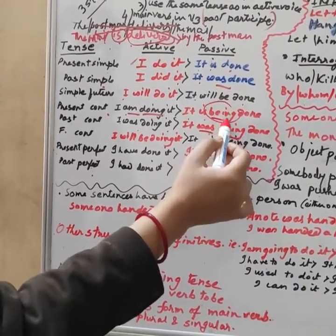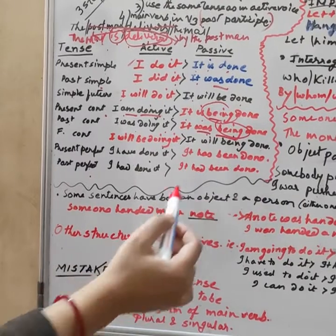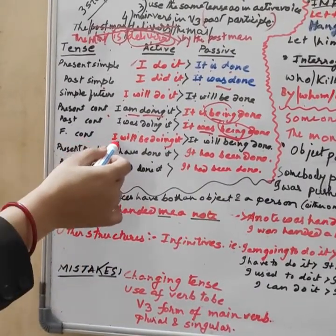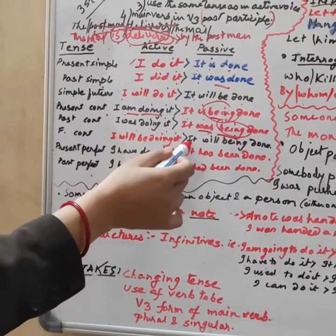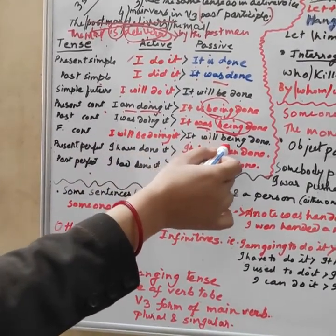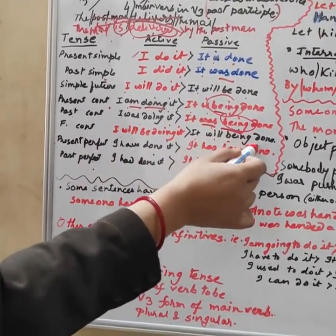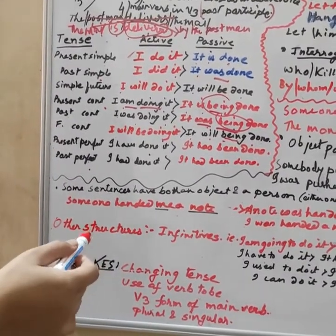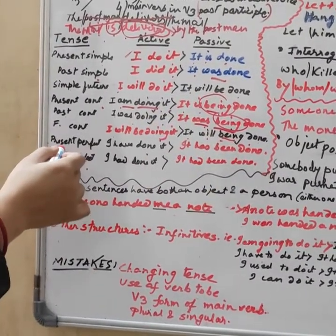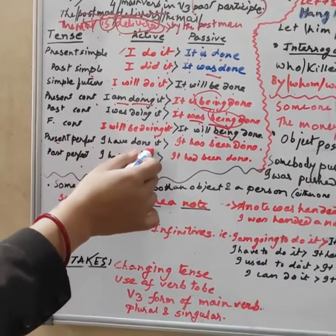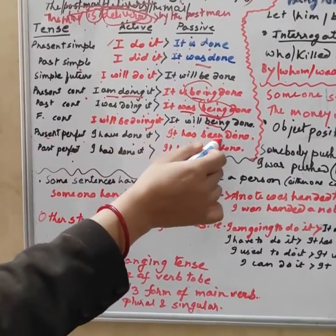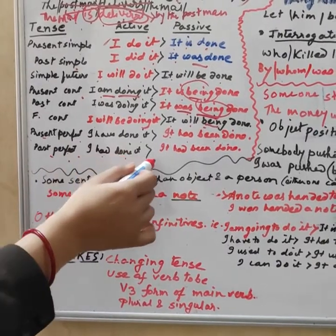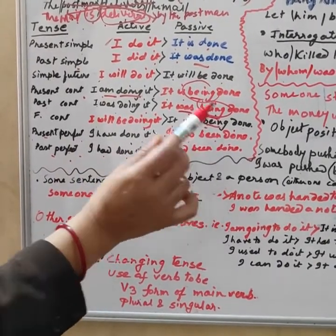Here 'being' plays a very important role — never forget it. Future continuous: 'I will be doing it' → 'It will be being done.' When there is a sense of continuity, 'being' must be introduced. Present perfect: 'I have done it' → 'It has been done.' Past perfect: 'I had done it' → 'It had been done.'